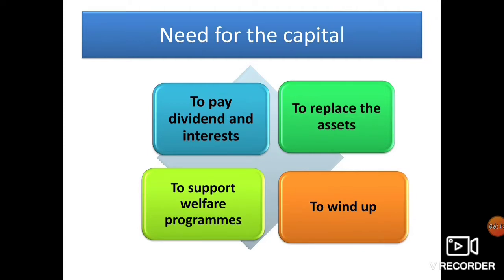The next need is to pay dividends and interest. Companies generally raise funds through issuing of shares, which are of two types: preference shares and equity shares. Preference shareholders are people who get a fixed amount of dividend on their shares; even if the company is not able to pay, the dividend will be accumulated for a future period. At the same time, the company needs to pay dividends to all shareholders as per the ratio of their shareholding.